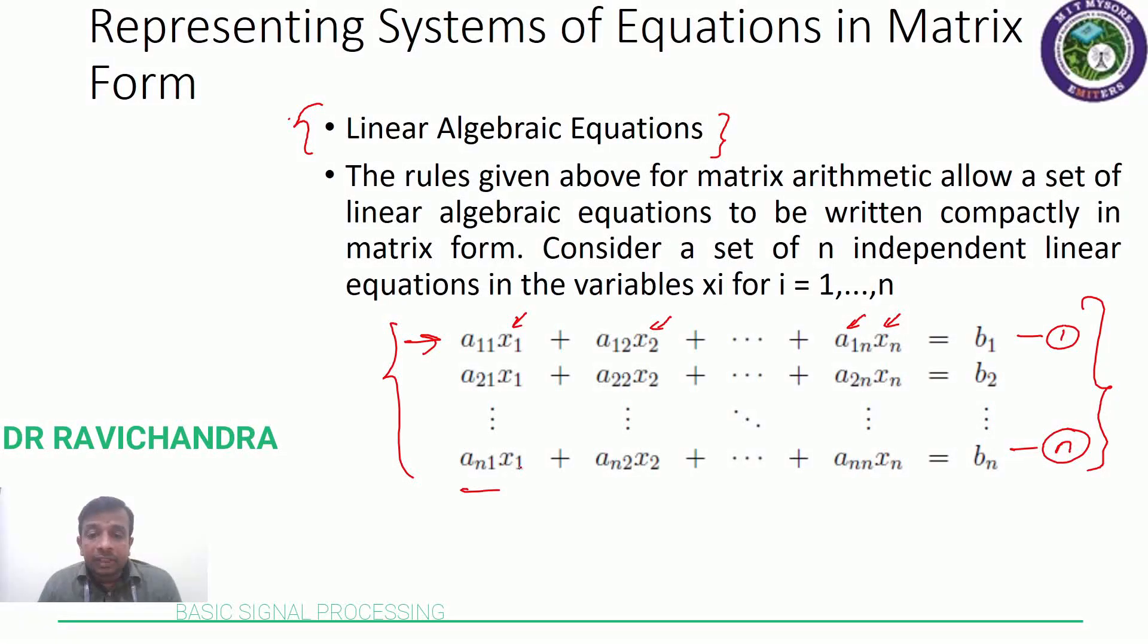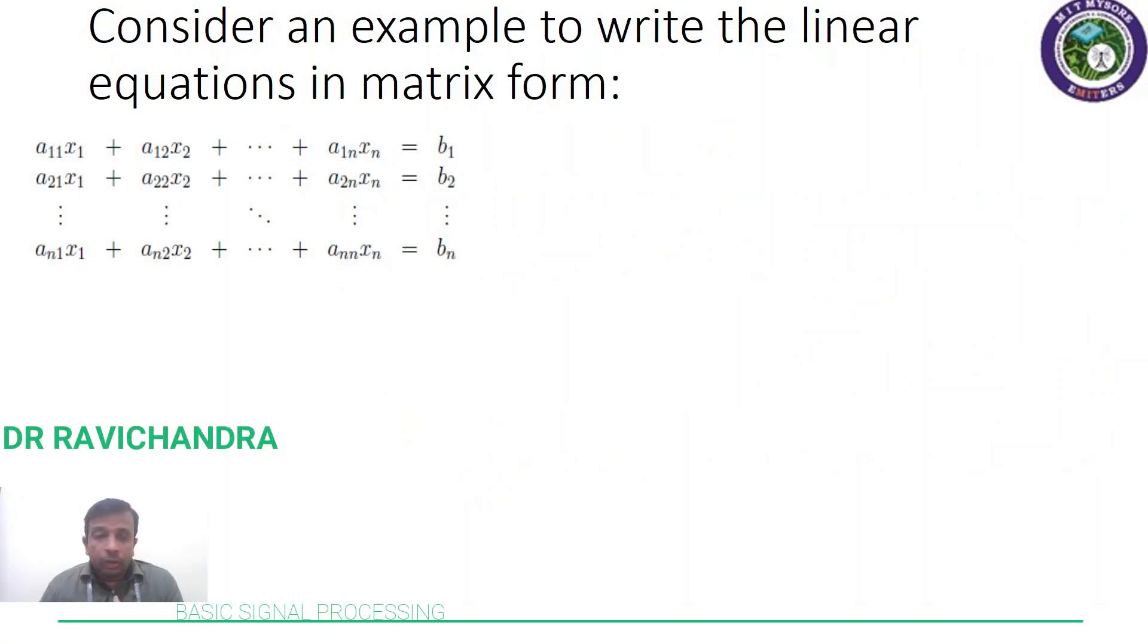Let us see how we can convert this into a matrix form. For this, slight knowledge about column vectors is required, which we did in the first video. I would ask you to visit the first video to know more about column vectors and row vectors. Moving ahead, how can we convert this system of equations into a matrix form representation, a compact form representation?